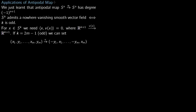We now talk about applications of the antipodal map. We have learned that a map alpha from S^n to S^n which is antipodal has degree minus one to the power of n plus one. The antipodal map sends a point x on the sphere to minus x, and this map alpha has degree minus one to the power of n plus one. So let us apply this.